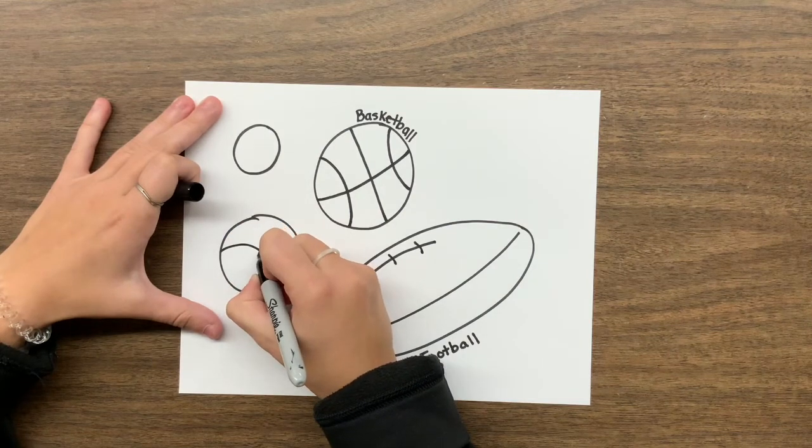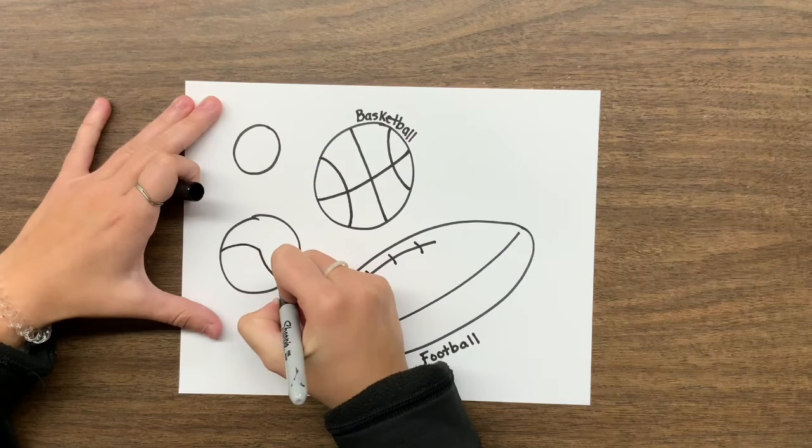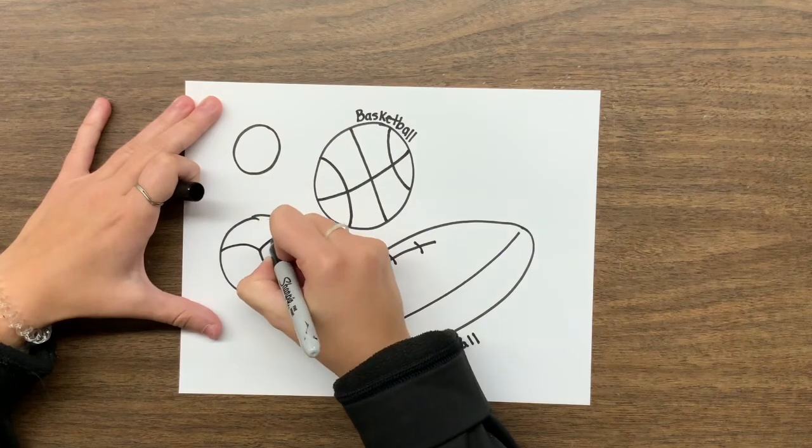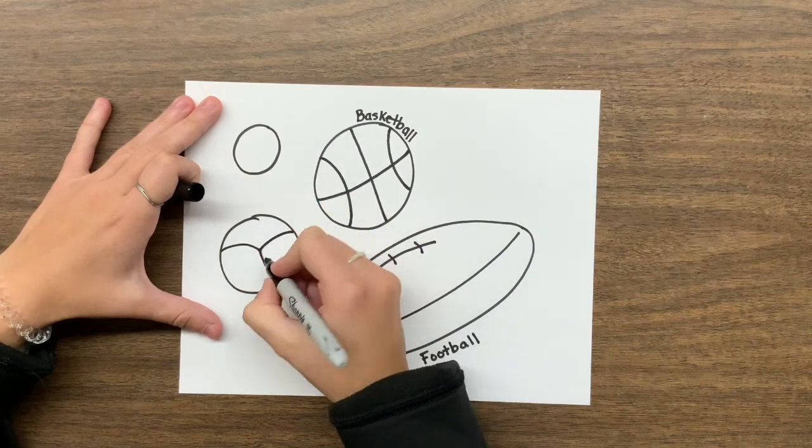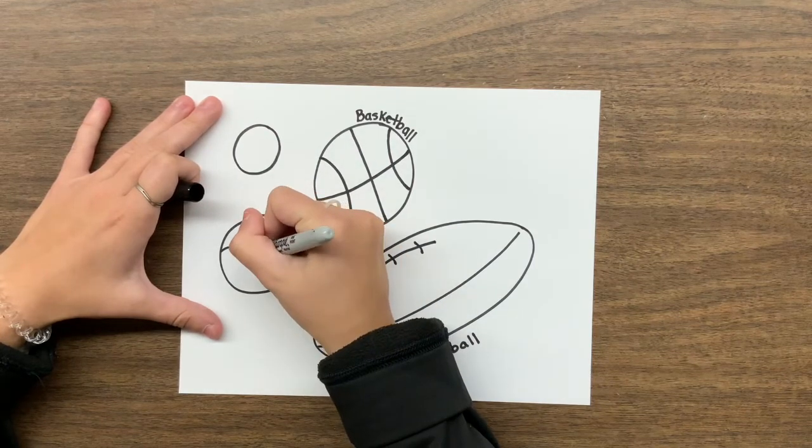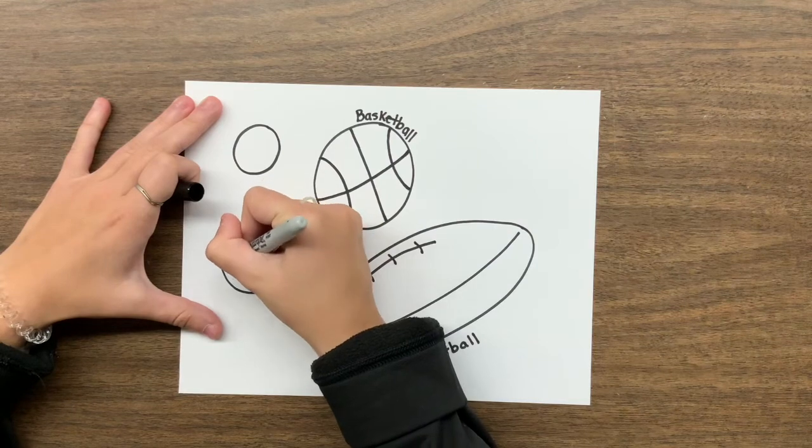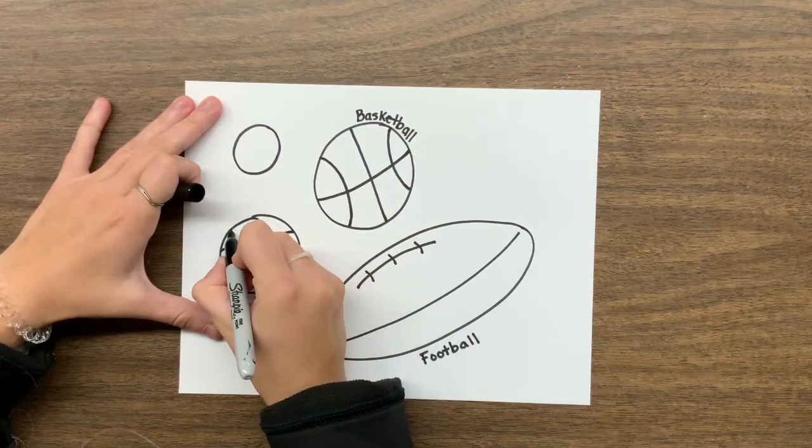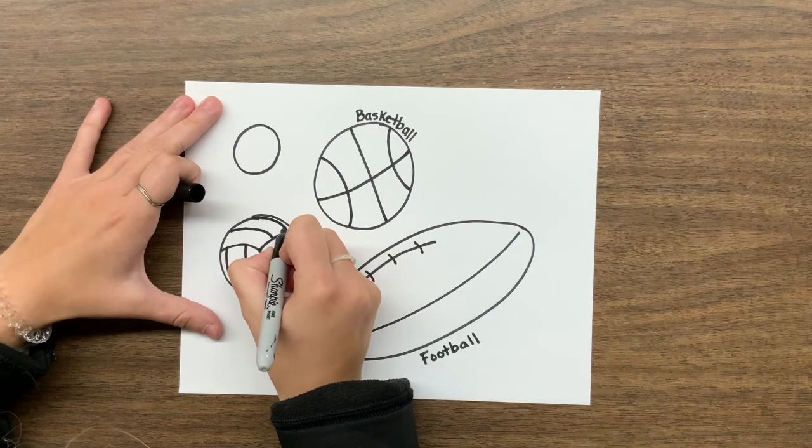This one here, the volleyball. You can see where we found a spot right there in the middle where they all come together. Definitely follow how this one happened. This was a little bit harder to draw, but once you do it, it'll look just like a volleyball, I promise.